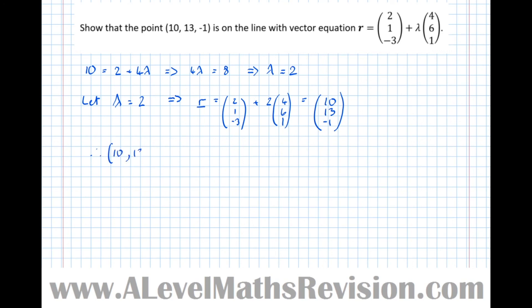So therefore, (10,13,-1) lies on R equals, and a conclusion is always a good idea with this, (2,1,-3) plus lambda (4,6,1).